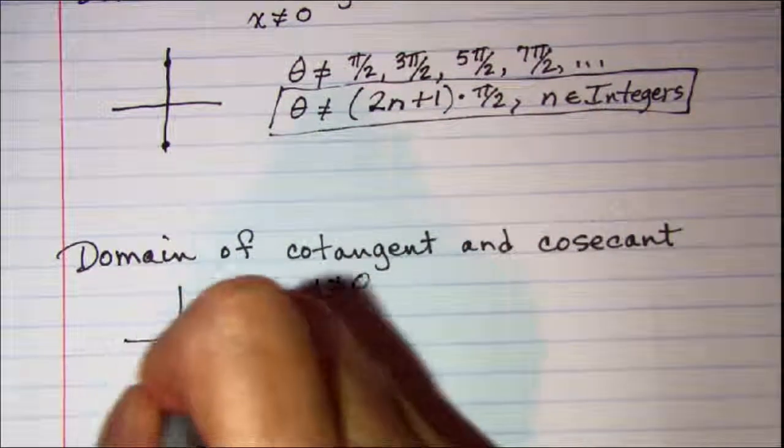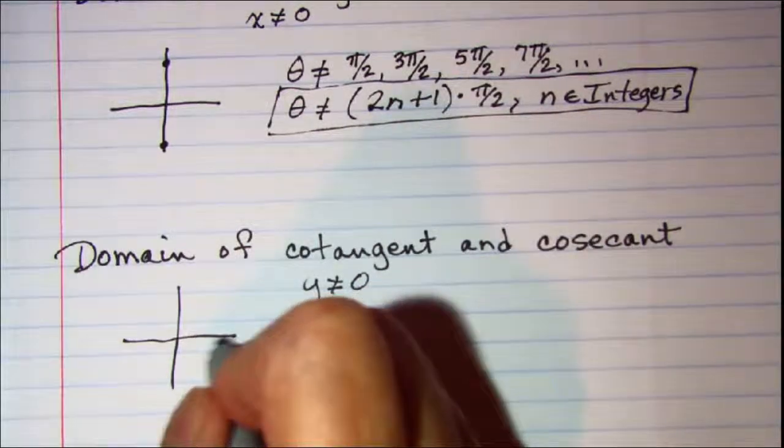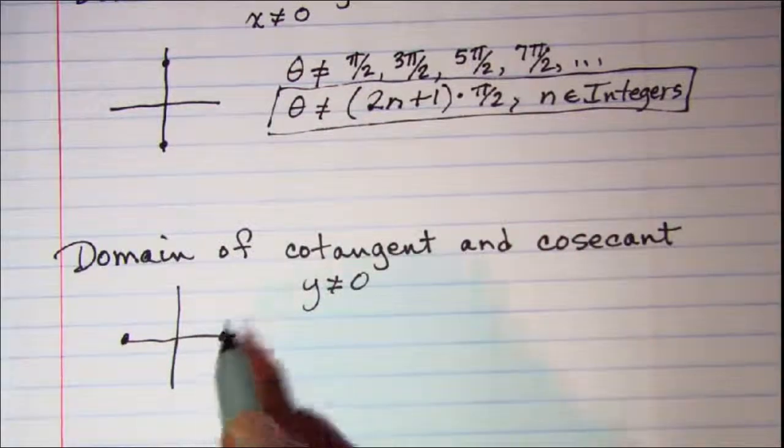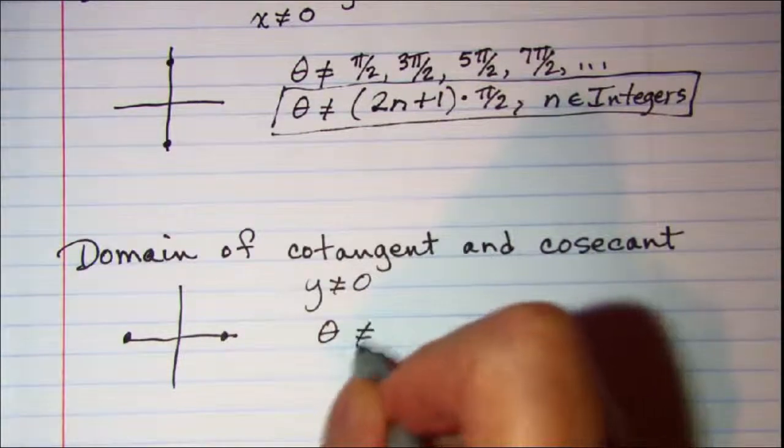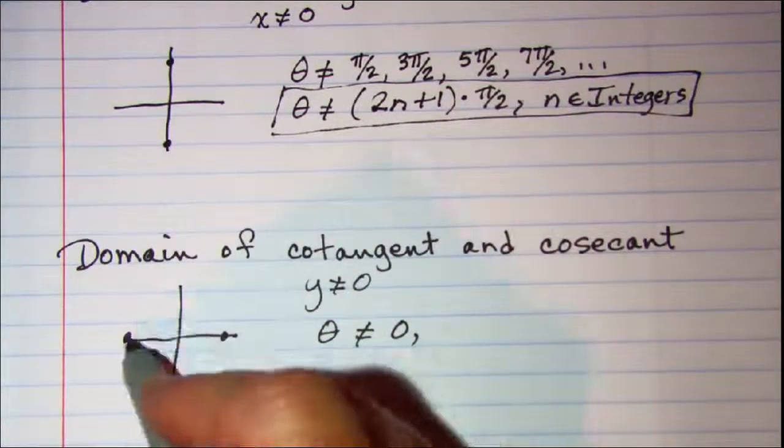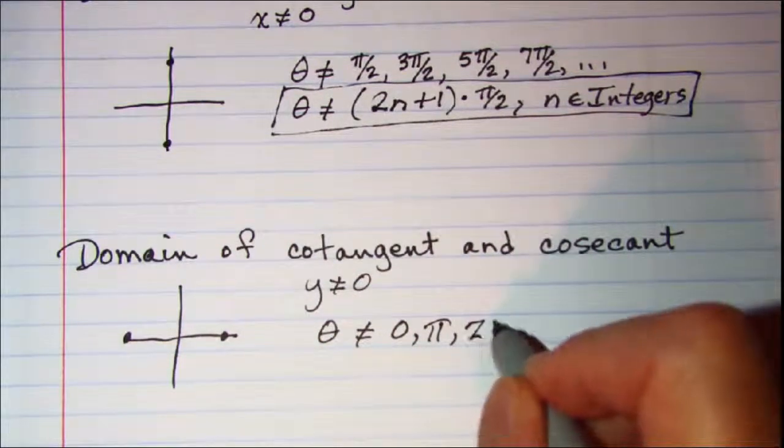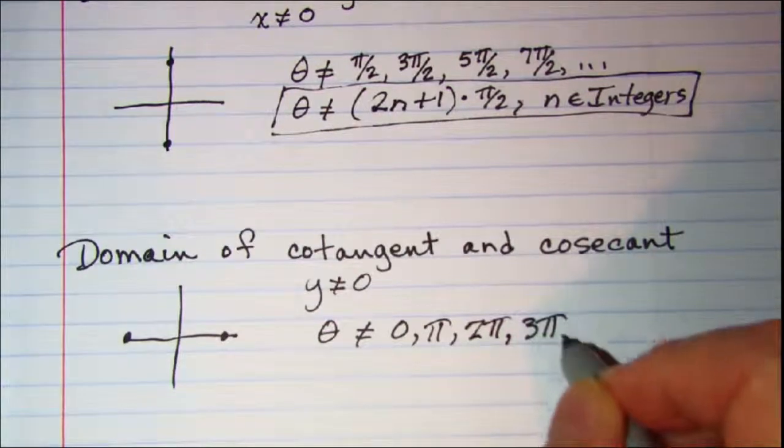On our coordinate plane, y not equal to 0 means that the angles cannot lie on the x-axis. So theta cannot be 0, pi, 2 pi, 3 pi, and so on.